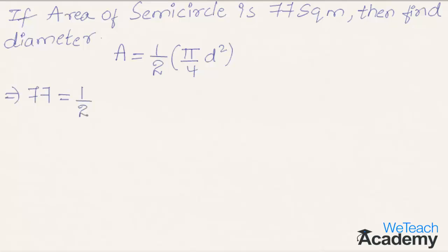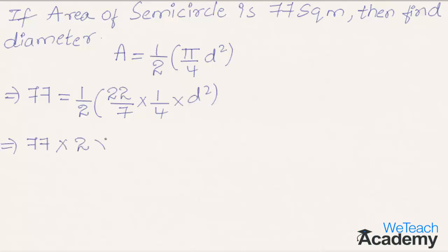Substituting the given value of area, that is 77, into the formula: 77 = 1/2 × (22/7) × (1/4) × d². Transferring all terms to the left-hand side, we get 77 × 2 × (7/22) × 4 = d².